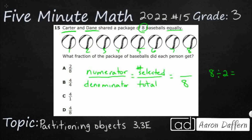That's just a basic fact, so that's going to get us four. I'm going to use a pattern and label them C and D: C for Carter, D for Dane, C for Carter, D for Dane, C for Carter, D for Dane, C for Carter, D for Dane. Let's make sure they each got an equal number — Carter gets one, two, three, four. So four for Carter and four for Dane. It looks like they are each going to get four.